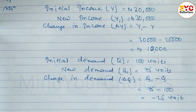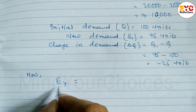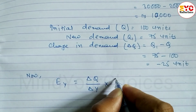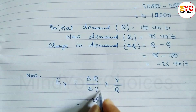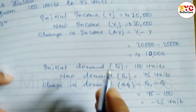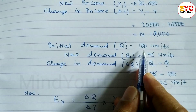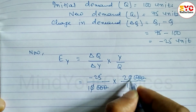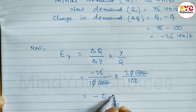Now we find income elasticity of demand, denoted by Ey. The formula is: change in quantity demanded divided by change in income, multiplied by initial income divided by initial demand. That gives us: (−25 / 10,000) × (20,000 / 100). Cancelling terms, we get minus 25 into 250 divided by 100, which equals minus 0.5.